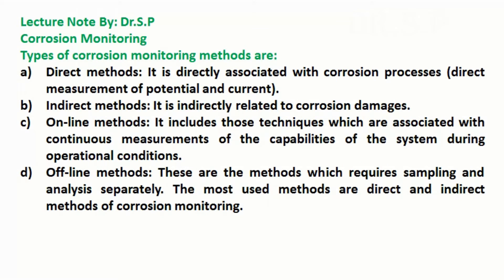Types of corrosion monitoring methods: Direct methods are directly associated with corrosion processes, meaning direct measurement of potential and current. Indirect methods are indirectly related to corrosion damages. Online methods include techniques associated with continuous measurements of system capabilities during operational conditions. Offline methods require sampling and analysis separately. The most used methods are direct and indirect methods of corrosion monitoring.